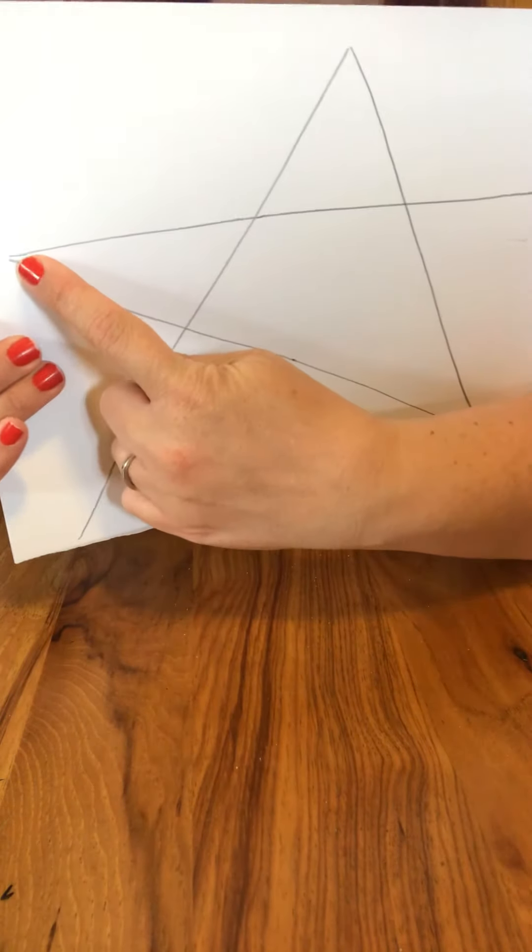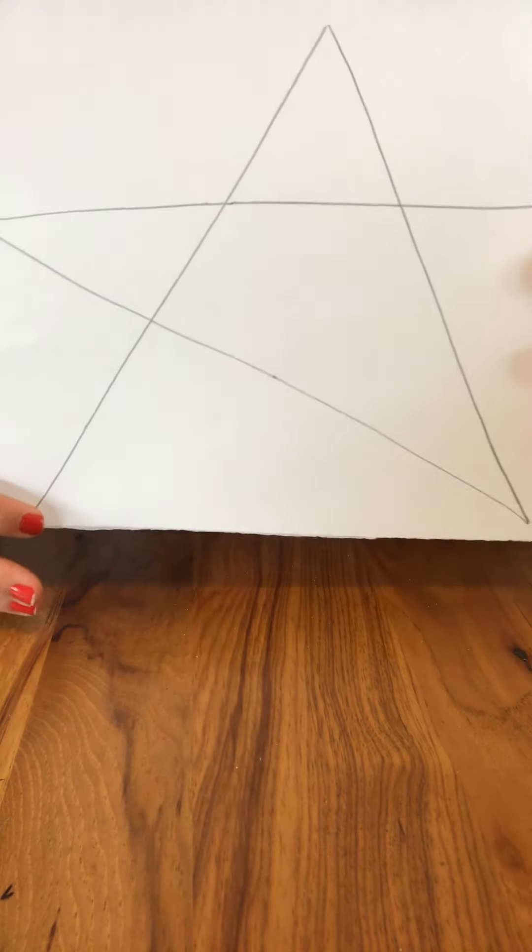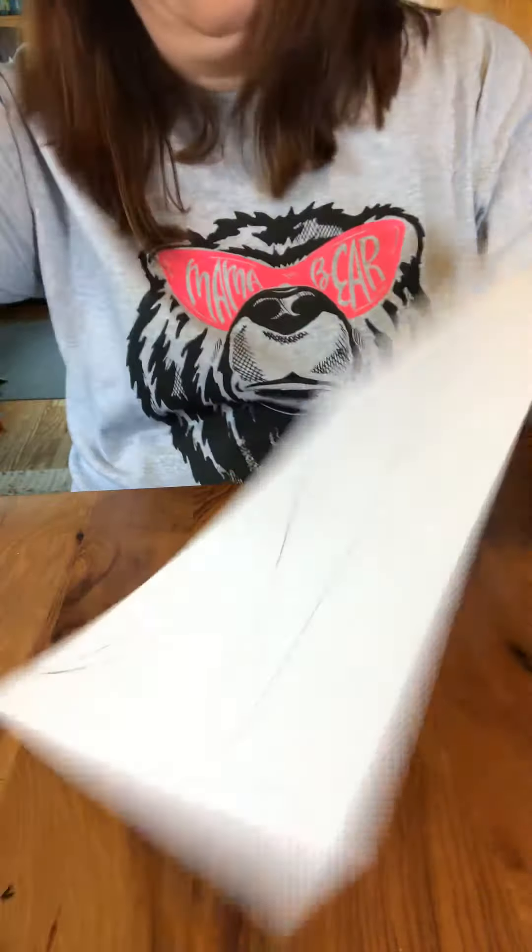So you go from here straight over to here and now we're going to go from this point down to this point down here. Draw a diagonal line from that point to that point. And you have a star.